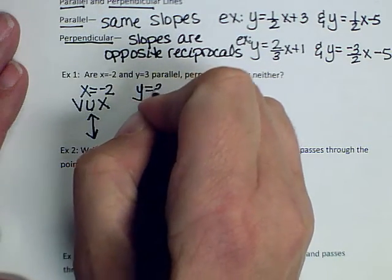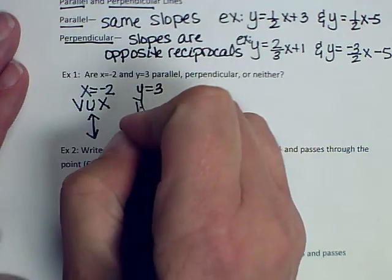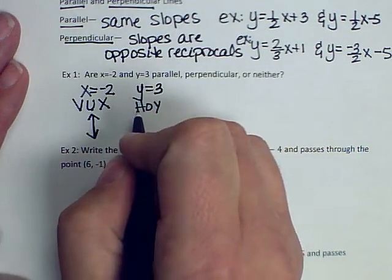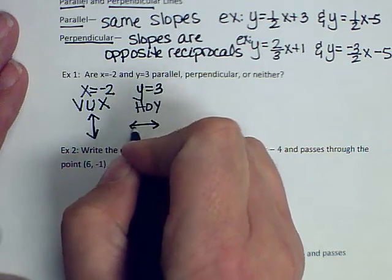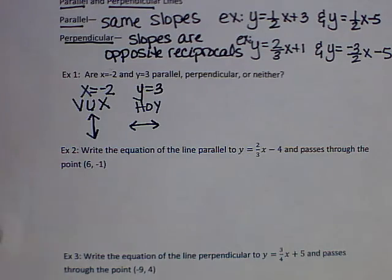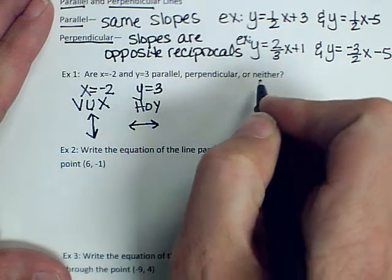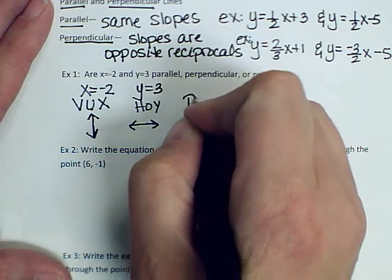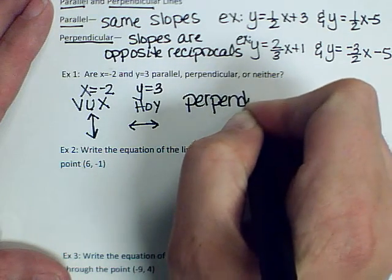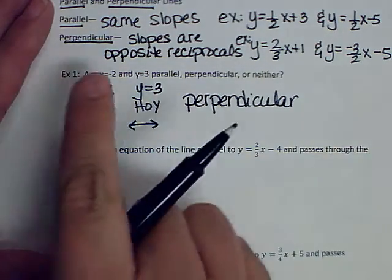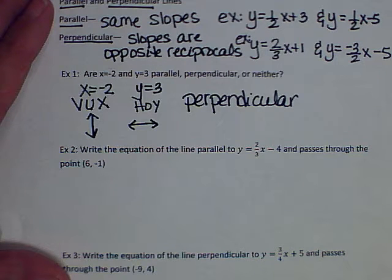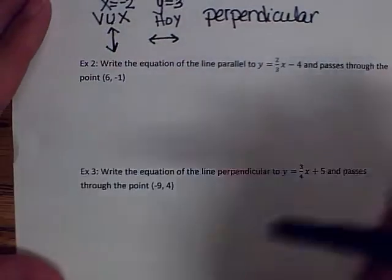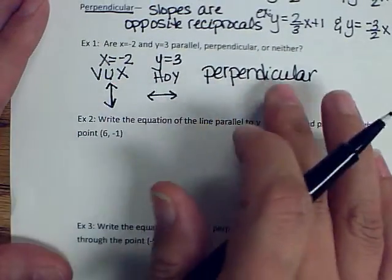If I think about y equals 3, that is a HOY problem — horizontal, zero slope, y equals a number. If I sketch that, one line is vertical and one is horizontal. So they have to be perpendicular. A vertical line and a horizontal line are perpendicular. Remember, x equals a number is VUX, y equals a number is HOY.